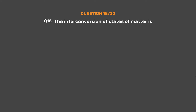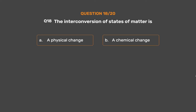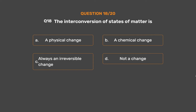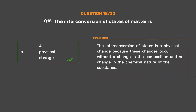Question number 18. The interconversion of states of matter is: Option A: A physical change. Option B: A chemical change. Option C: Always an irreversible change. Option D: Not a change. The correct answer is Option A: A physical change. The interconversion of states is a physical change because it occurs without a change in the composition or chemical nature of the substance.